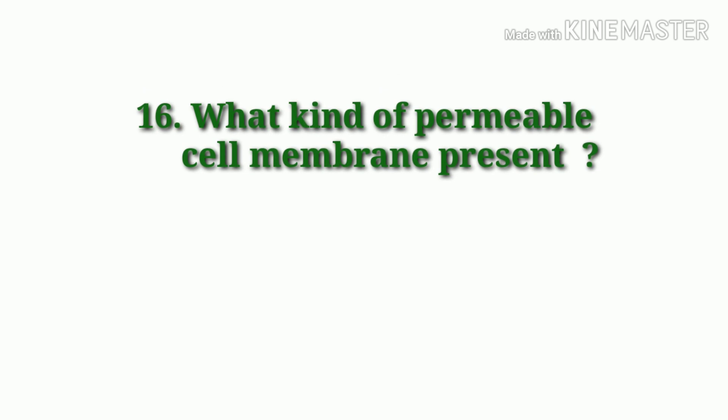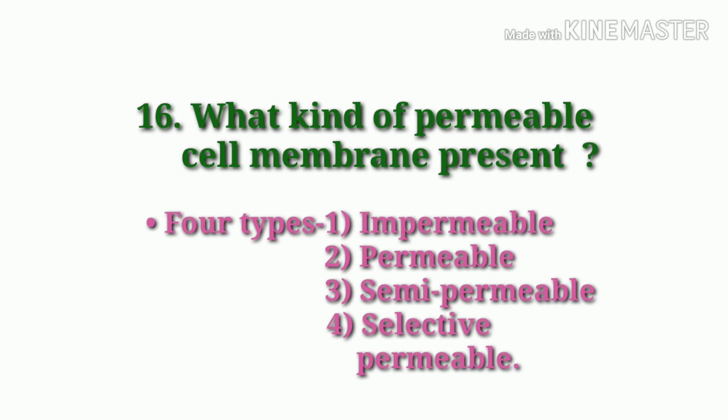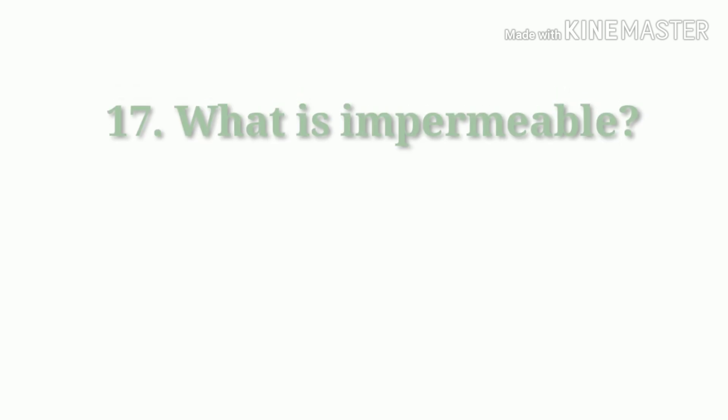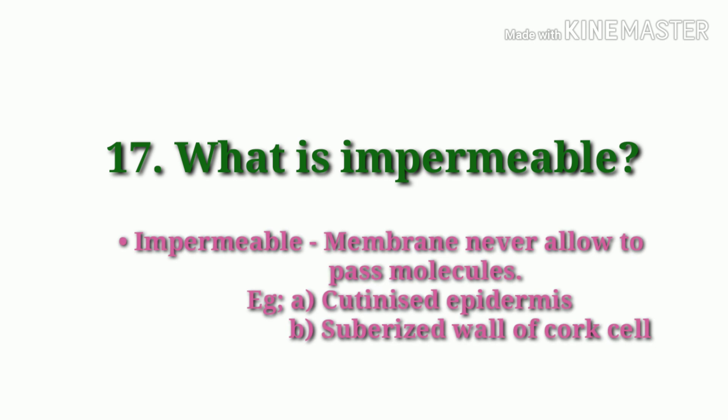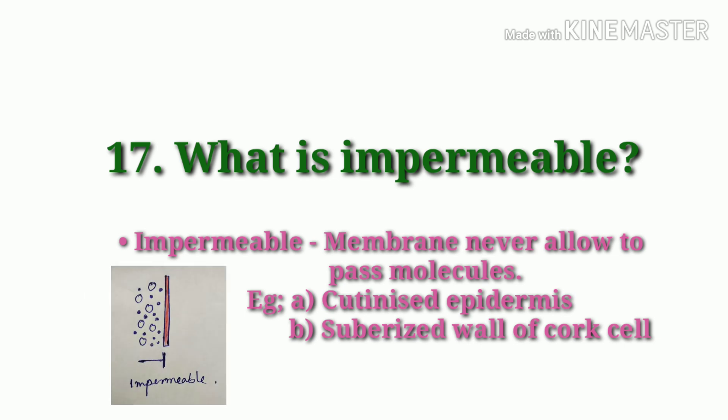What kinds of permeable cell membranes are present? There are four types: impermeable, permeable, semi-permeable, and selectively permeable membrane. Impermeable membrane never allows molecules to pass. Examples: cutinized epidermis and suberized wall of cork cells.